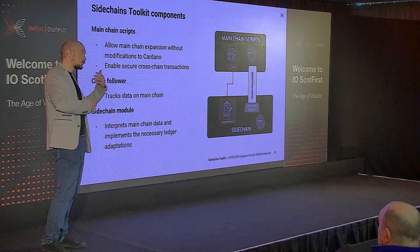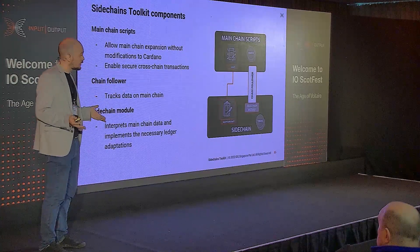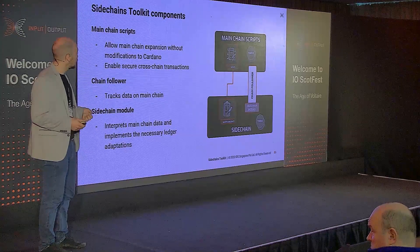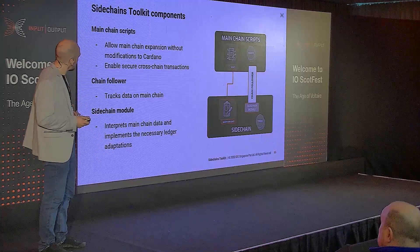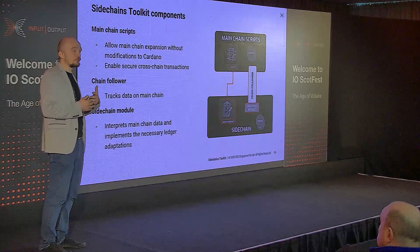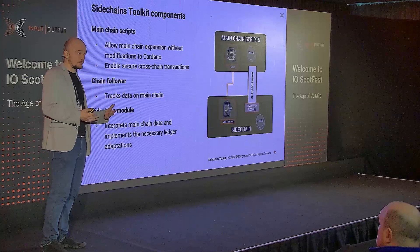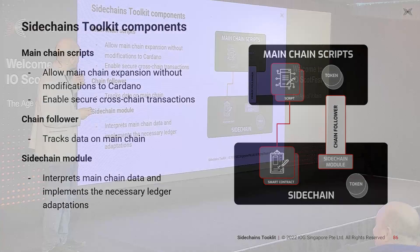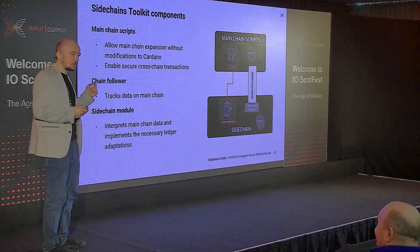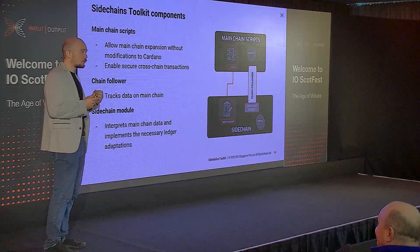Circling back to Mamba — the first EVM sidechain for Cardano from IOG — all of these components are implemented in a very particular way. There is a solution for this problem that we find meets the requirements we set out to meet. So the question is, what should the toolkit be? What should it do?